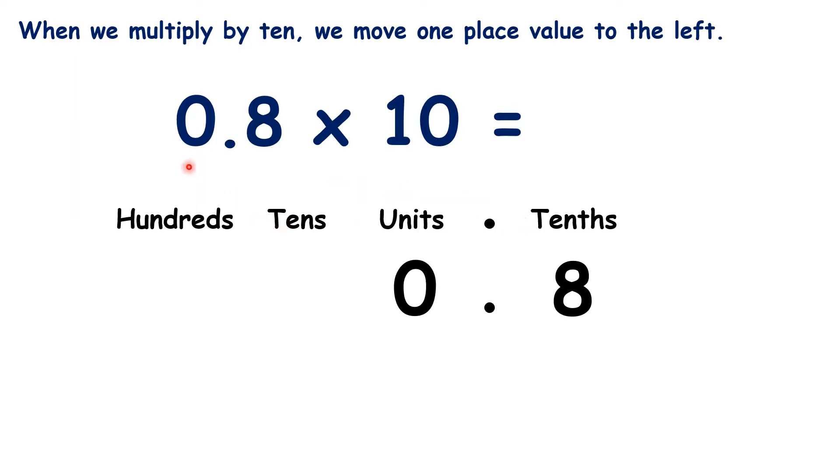So what's 0.8 times 10? Again, we move the digits one place to the left. We can ignore 0's to the left of a whole number, so our answer is 8.